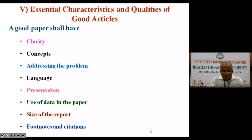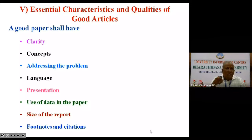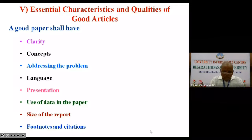The fifth quality is presentation. You should see that your ideas and text are very neatly presented. There must be sequence and also continuity — from one paragraph to another, there must be continuity. While reading your text or manuscript, there should be a flow and a sequence. The sixth component is use of data in the paper. When we talk about a research paper, you should use as much data as possible. Without data, you cannot write a research paper. This you have to note, my dear friends.